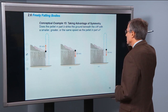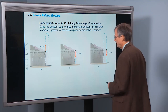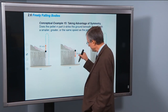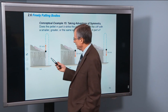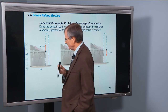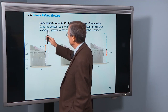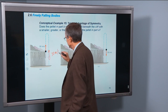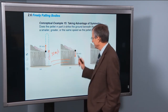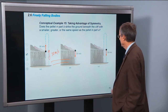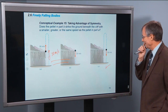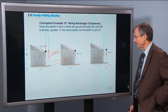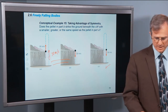Symmetry: if you project a pellet downward at 30 meters per second from a cliff, compare that with throwing it upward at 30 meters per second. In the absence of air drag, throwing it up means it goes up, comes to rest, turns around, and by the time it reaches the launch point again, it's going 30 meters per second downward — exactly the same as the first case. So it will hit the ground at the same speed whether you throw it up or down at 30 meters per second.